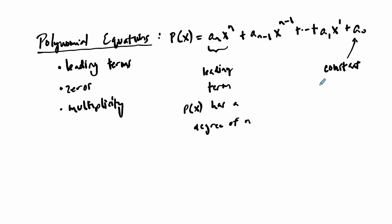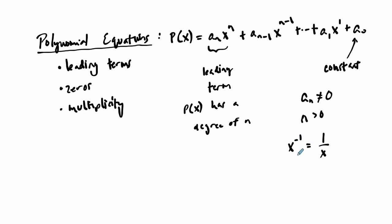There are two things to think about: the leading coefficient is not zero, and n has to be positive. If you had x to the negative one, that would be one over x, which is not a polynomial function — clearly undefined if x were zero. So we don't allow for those negative exponents that would create holes in your graph.